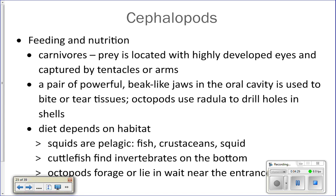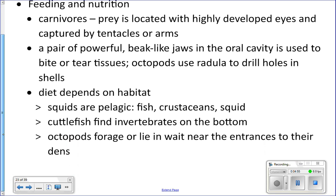This is just briefly for your information. Cephalopods are carnivores; they find their prey with their well-developed eyes, then use their arms or tentacles to reach out and grab food. Between all of their arms they have a beak, which you saw in your dissection, and they use it to tear up prey and swallow the pieces. Their diet depends on where they live.